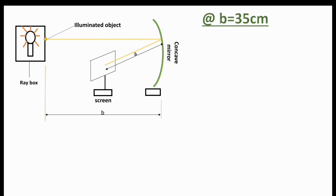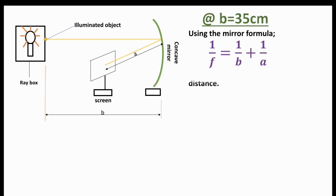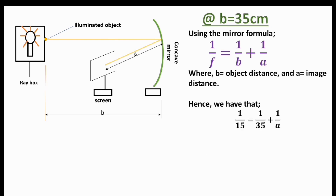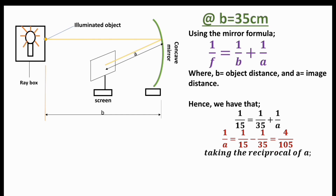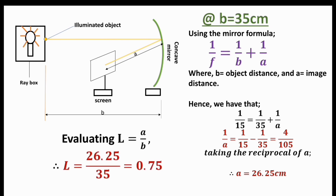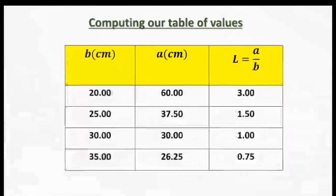When b equals 35 centimeters, using the same mirror formula: one over 15 equals one over 35 plus one over a. Simplifying, one over a equals 4 over 105. Taking the reciprocal, a equals 26.25 centimeters. Evaluating l: 26.25 divided by 35 equals 0.75. In the table: b = 35.00, a = 26.25, l = 0.75.